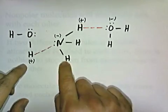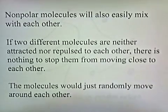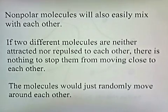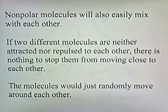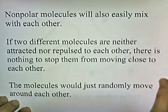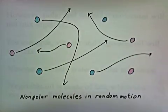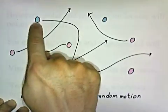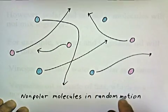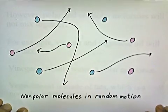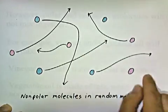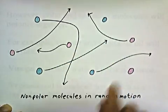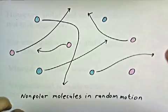Different types of polar molecules can mix together. Non-polar molecules will also easily mix with each other. If two different molecules are neither attracted nor repulsed to each other, there's nothing to stop them from moving close together, so molecules just randomly move around each other. The blue and pink dots represent two different types of non-polar molecules. Since they're neither attracted nor repulsed, they'll just swirl around each other in random motion and intermix.